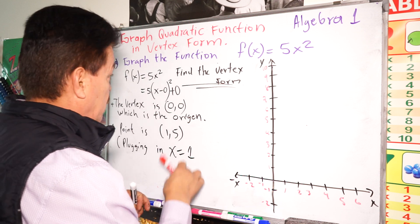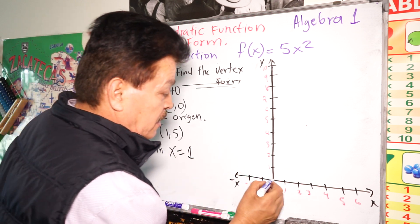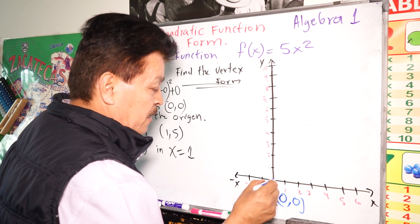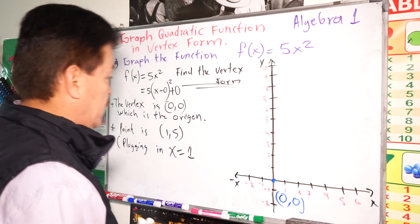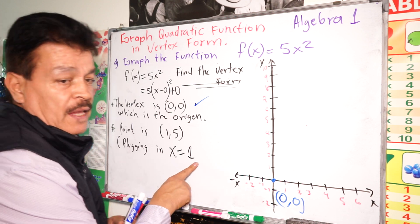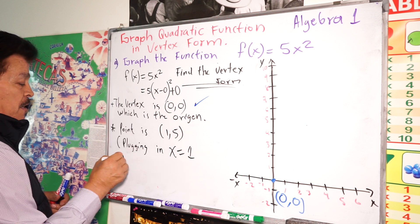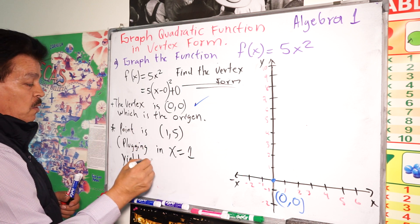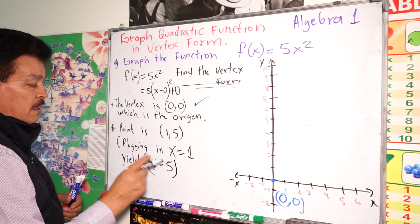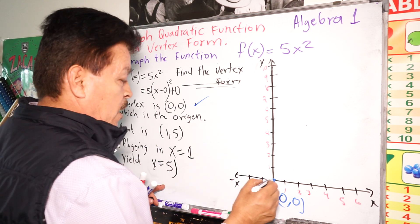The origin is the vertex, the first point. The vertex is right here, the origin (0, 0). We have the vertex form of the parabola right there. Now look for another point, and in this case when x = 1, y = 5. So here is 1 and 5 right here.